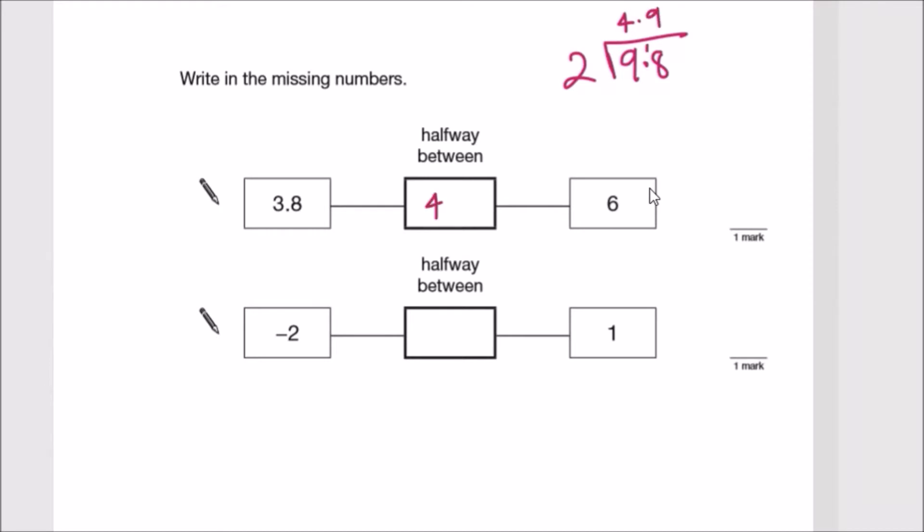Next one: -1 and 1. First, adding these two up, so -2 plus 1 should give us -1. Then halving it by dividing by 2, you can leave it as -1 over 2 or -0.5. Both of these work.